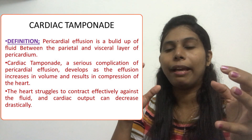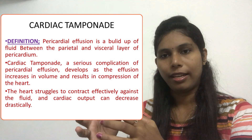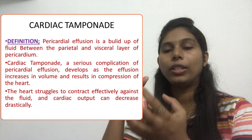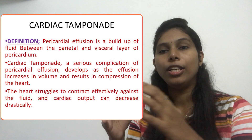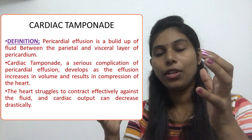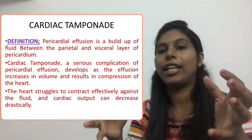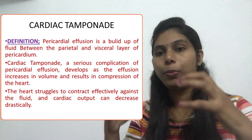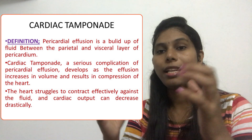When fluid fills between the parietal and visceral layers of the pericardium, that is called pericardial effusion. When a large volume of fluid fills this particular cavity, it leads to cardiac tamponade — because in this situation the heart is compressed by the large amount of fluid inside the pericardium.